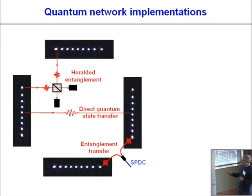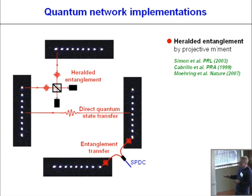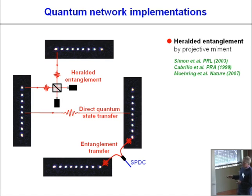In this network implementation, the typical idea is to use ions as the storage nodes — the stationary qubits — and photons as the flying qubits that connect these nodes. There are three classes of operations to implement in order to connect distant ion trap computers. One is heralded entanglement, where you make two atoms at large distance emit single photons, put them on beam splitters, and by some indistinguishability deduce that the two ions become entangled. This was proposed by Cabrillo and Simon and put into practice in Chris's group.